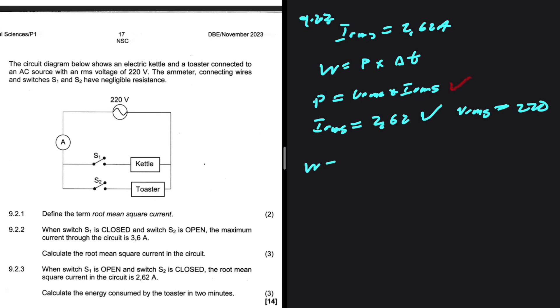So, the energy consumed will be equal to the power, which is 220, our VRMS multiplied by the current, which is 2.62, multiplied by the time, which is 120. I have the answer, but I have to put it in my calculator again and make sure. This is 69,168 joules. Energy is in joules and not watts.